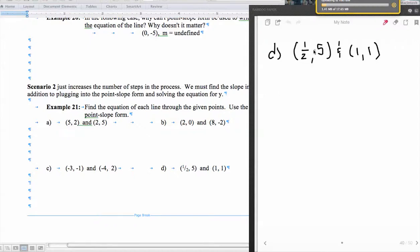Alright, this next one can be a little tricky. Remember, the first place that we start out is to check your x's. Are they the same? No, so it's not a vertical line. Check your y's. Are the y's the same? No, so it's not a horizontal line. So we've got to find the slope.